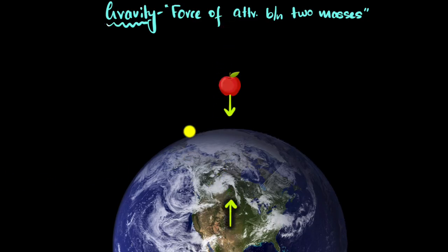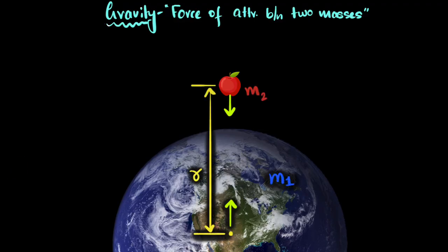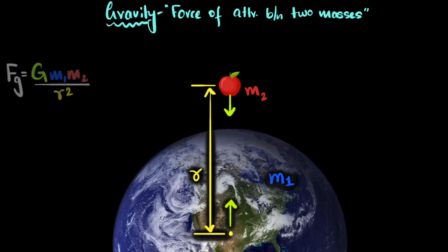Now, it turns out Newton had similar lines of reasoning. By looking at observations of how the moon goes around and how the planets go around the sun, he was actually able to come up with an expression for this force of gravity. So let's label these things: the mass of the Earth is m1, mass of the second object is m2, and the distance between their centers — not the surfaces, the distance between the centers — is r. The force of gravity between those two objects is given by this expression. We'll come back to what G is in a second.